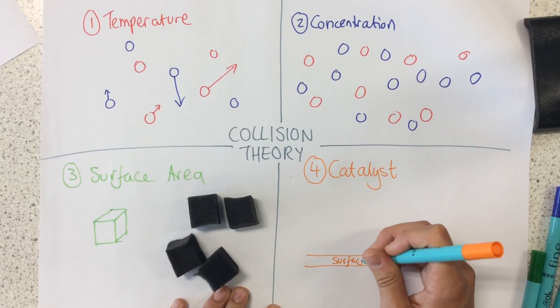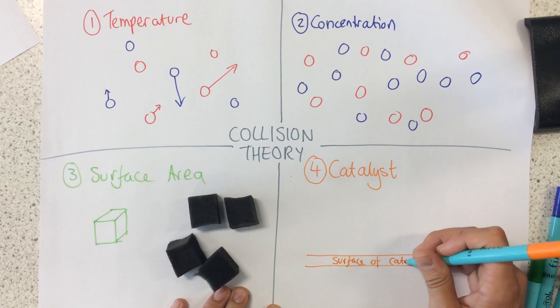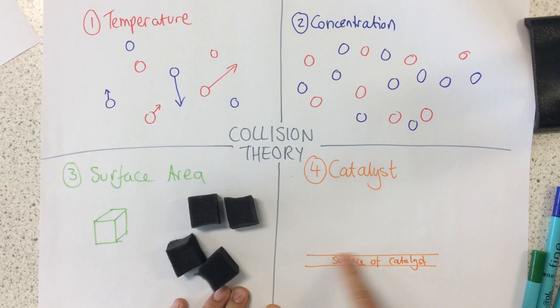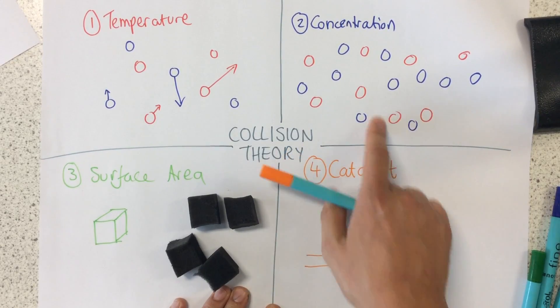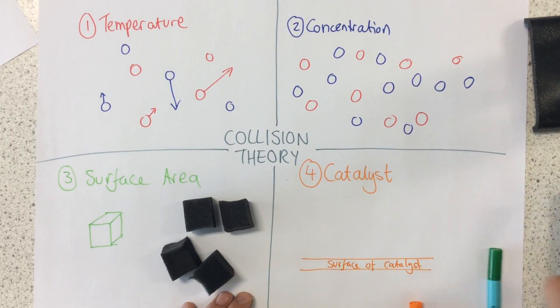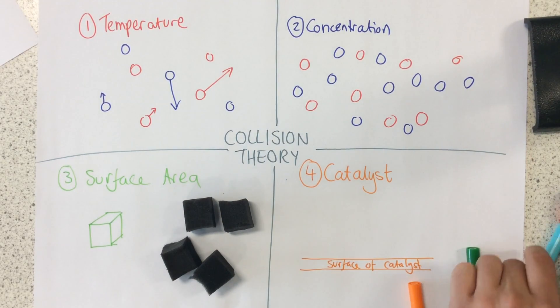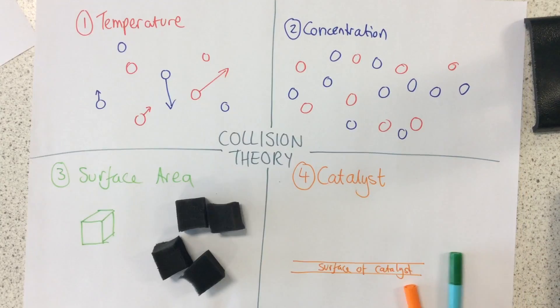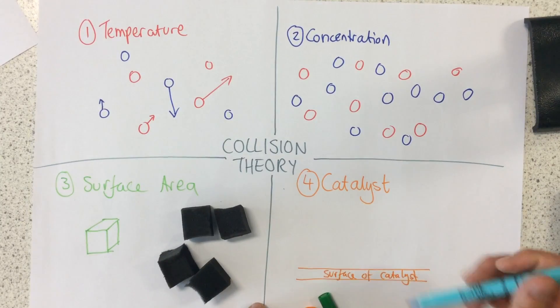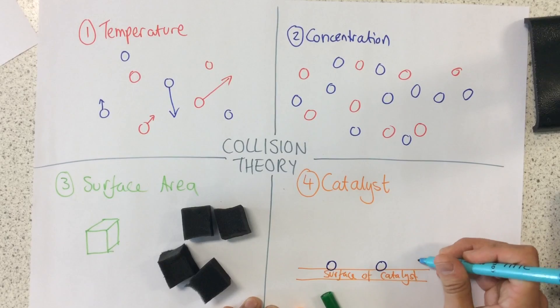The surface of the catalyst acts as a surface for our particular reactants to react. So rather than just moving around, they can actually react upon the surface of the catalyst, like this.